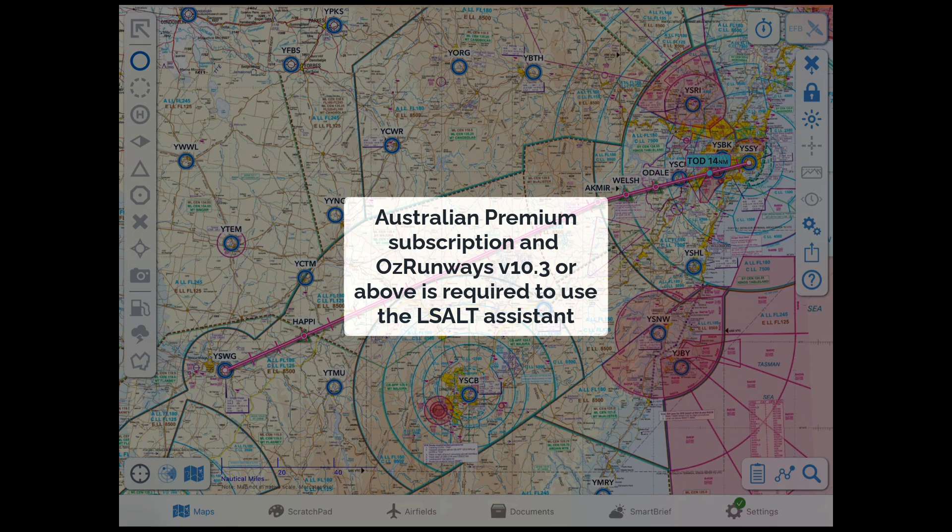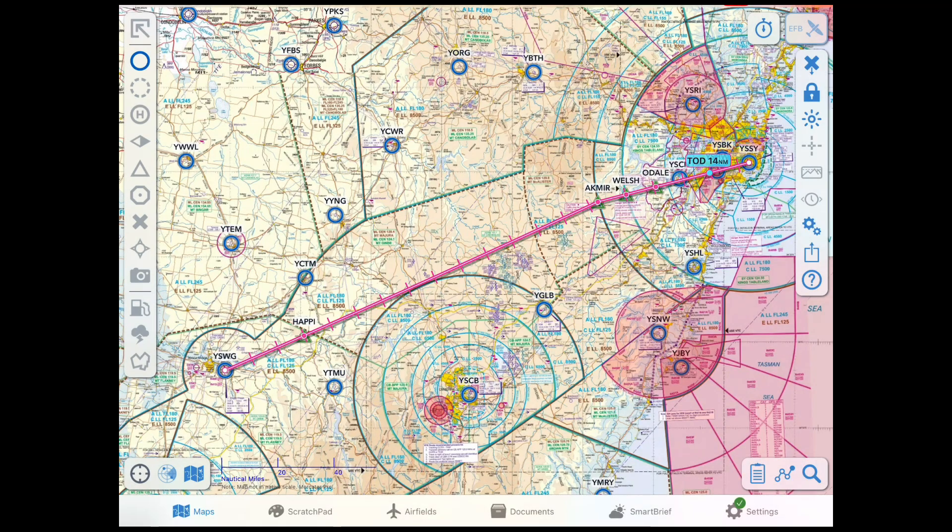Using a new obstacle dataset from Air Services Australia, AusRunways can now help you calculate your lowest safe altitudes using the LSALT Assistant feature.